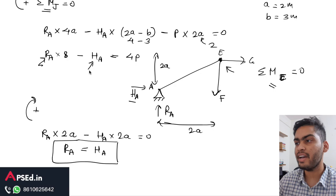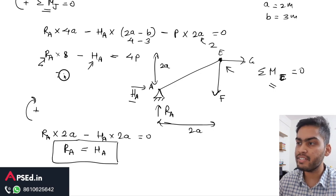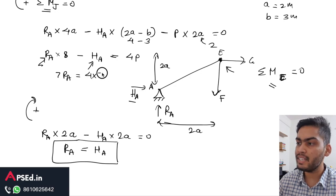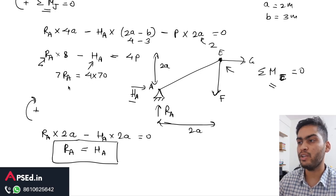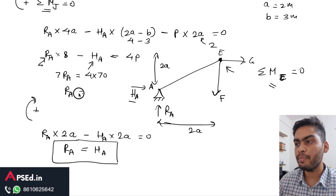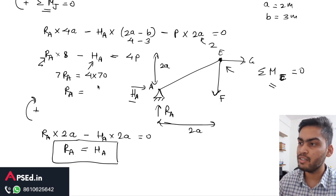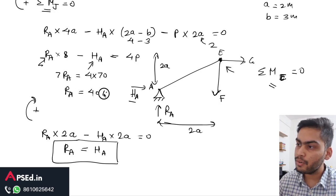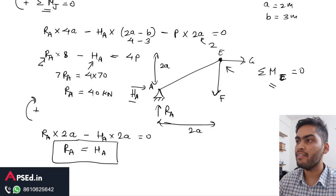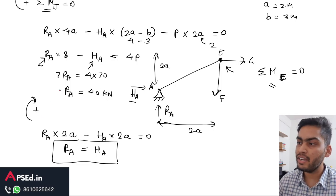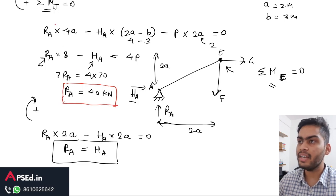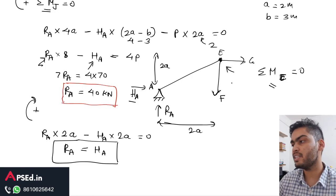Substituting R_A equals H_A into the earlier moment equation: 7·R_A equals 4P equals 4 times 70 equals 280. Therefore R_A equals 40 kilonewtons.